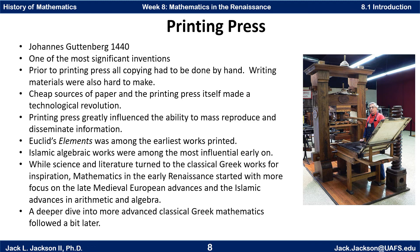As discussed before, many times things that were not deemed important just didn't get copied and got lost — it was just too much work. Even very important works had few copies, and errors could come into the copying process. Around the time the printing press came about, a cheap source of paper was also developed. That combination of paper and the printing press made for a vast technological revolution, greatly influencing the ability to mass produce and disseminate information — one could write a book and reproduce it en masse to get copies out to many people.